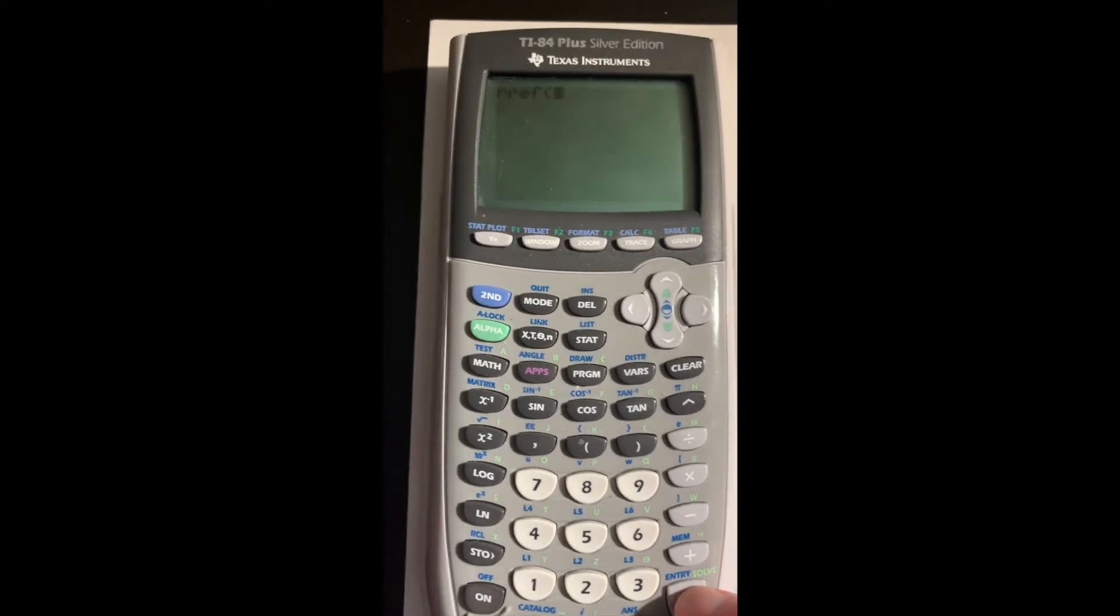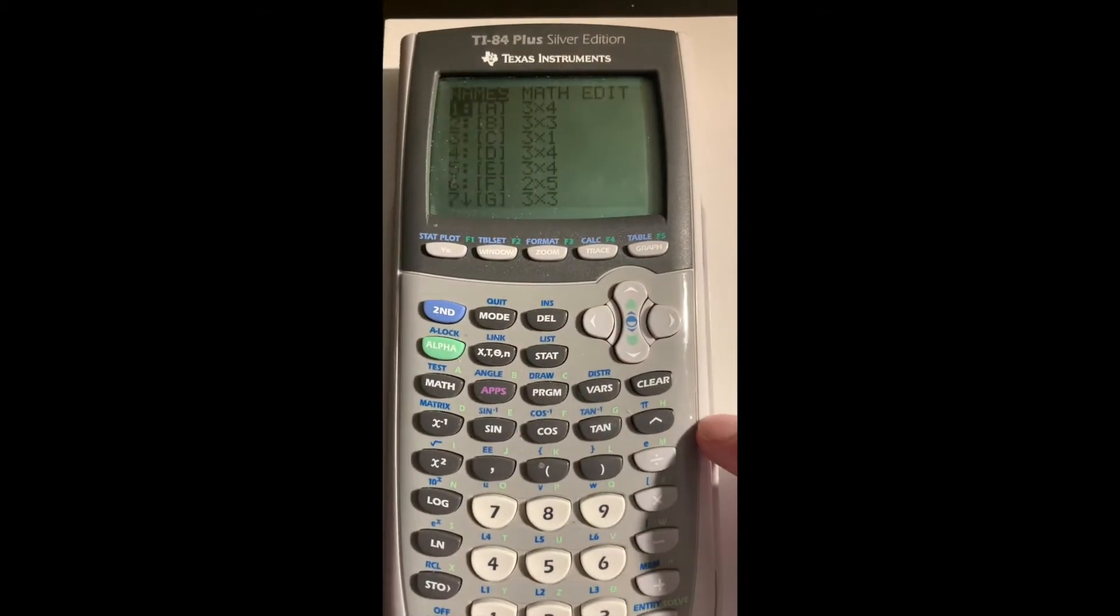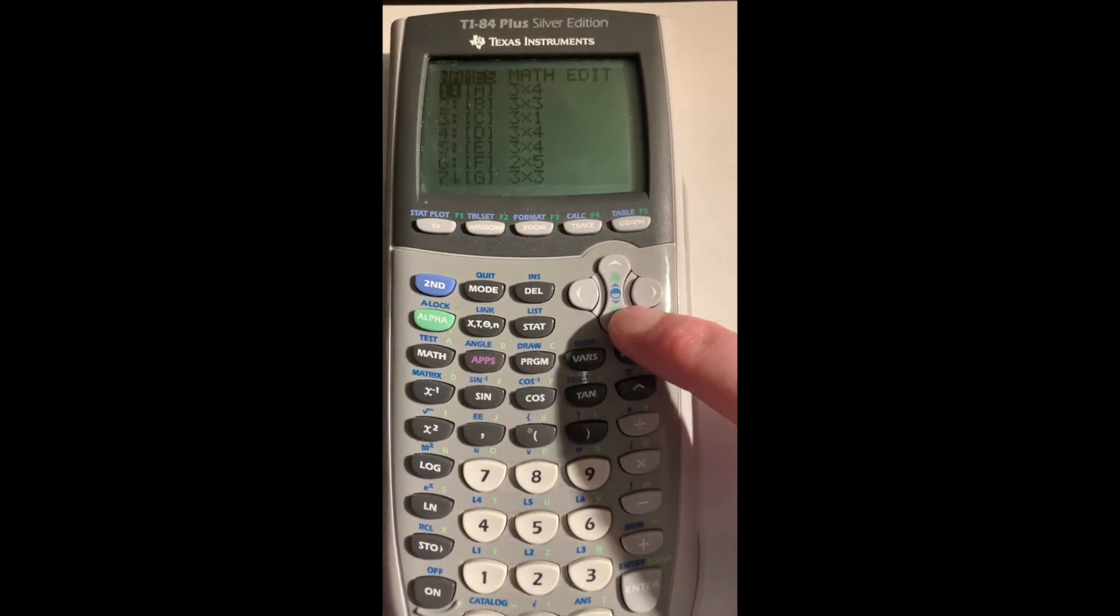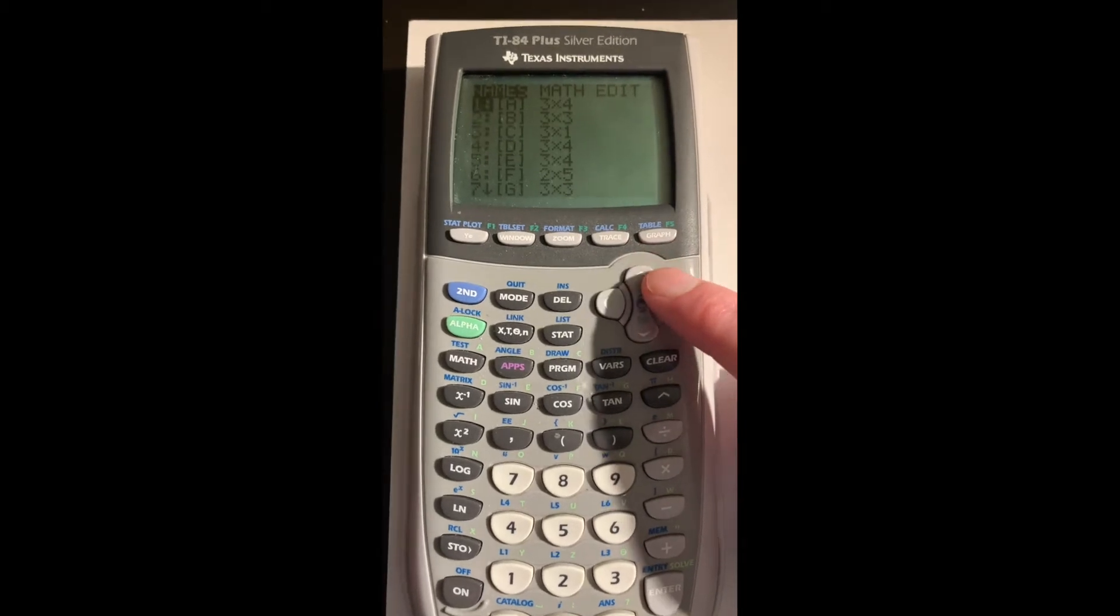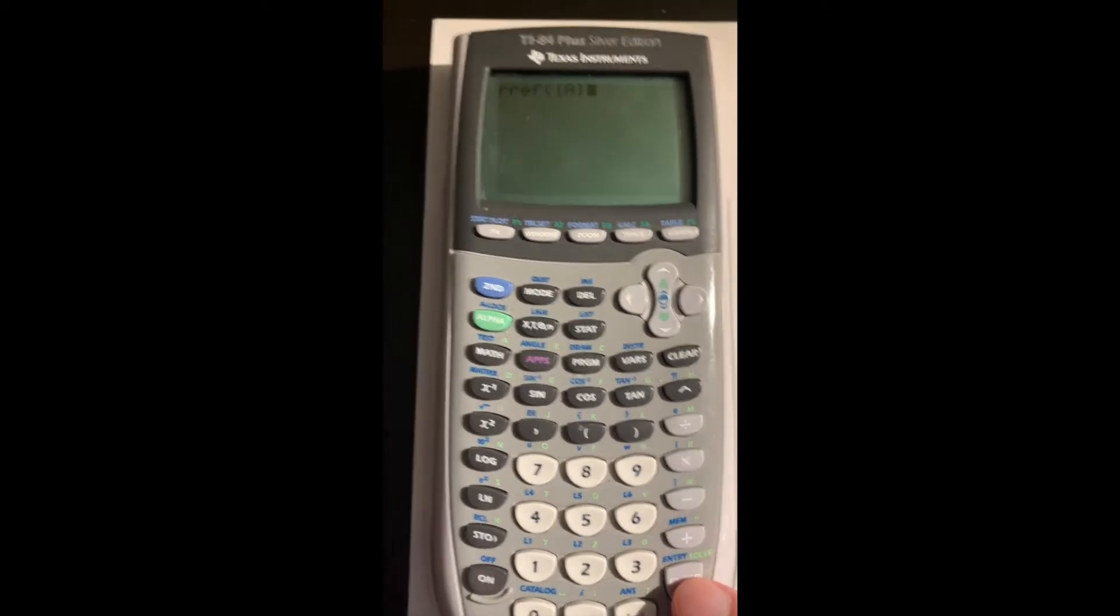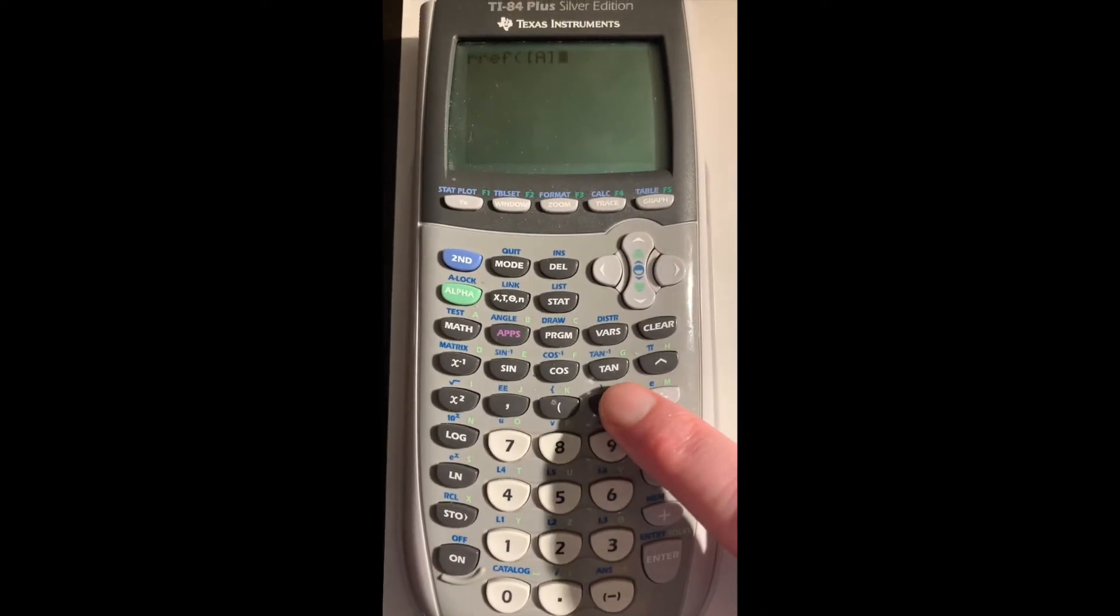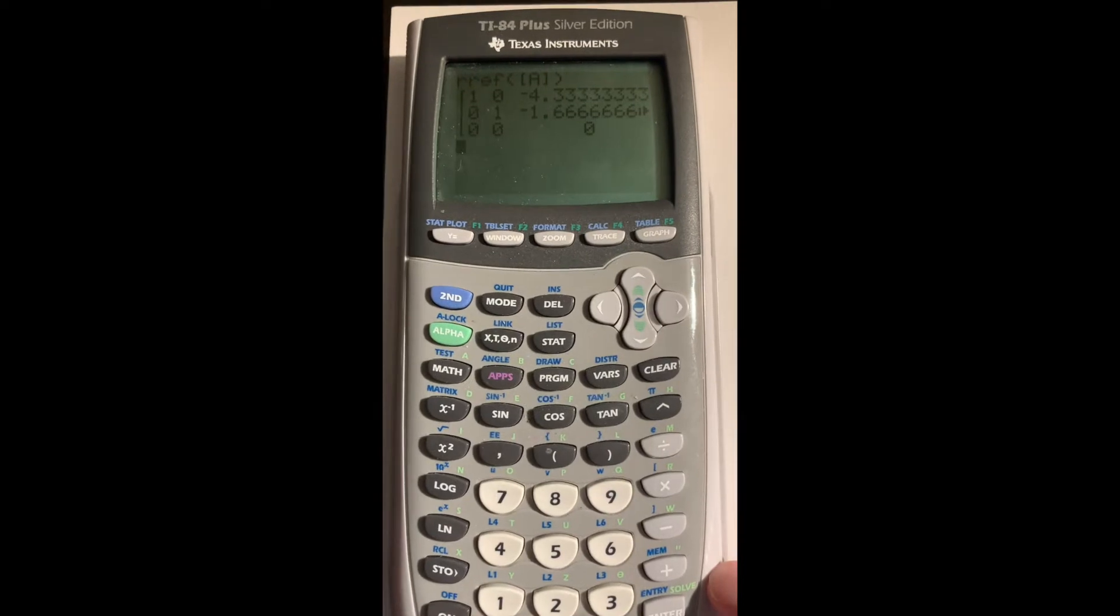We go back to the matrix menu, second, x to the minus 1. We have to tell it which matrix to reduce. We can scroll up and down with the arrow buttons, but we want matrix A. So we just highlight that one and press enter. You can close the parentheses if you want, it doesn't matter either way. Press enter and it will row reduce the matrix.